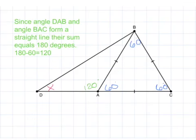We also know that we have a straight line right here. Angle BAC and angle BAD make a straight line, so the sum of their angles must equal 180. So that gives us 120 degrees here.